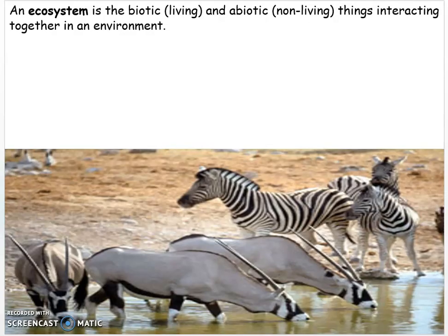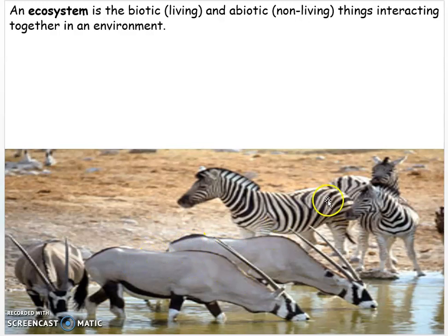Let's look at a picture of an ecosystem. What are the living and non-living things — or the biotic, which are the living, and the abiotic, which are the non-living things? Here we have some animals drinking from the water and just standing around. The living or biotic are the animals. The non-living or abiotic is the water.